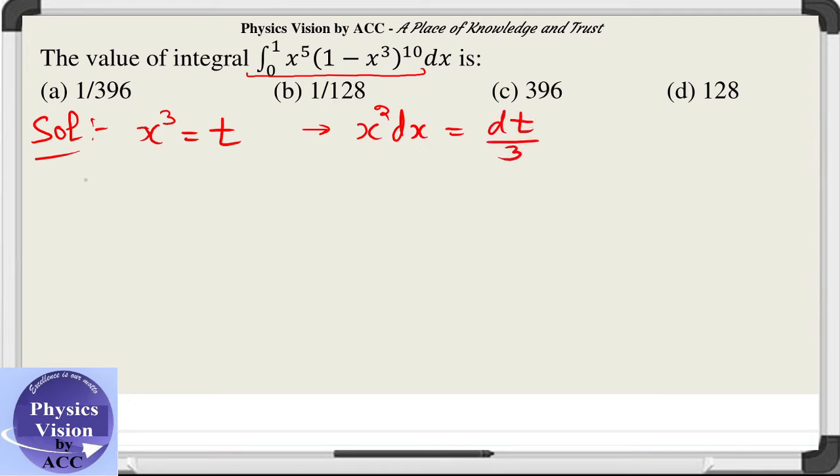And the given integral from 0 to 1, x to the power 5 can be written as x cube into x square, and this is 1 minus x cube power 10 dx.